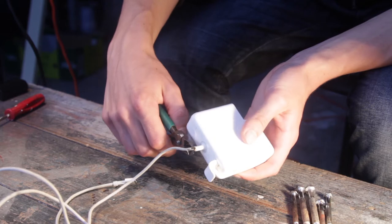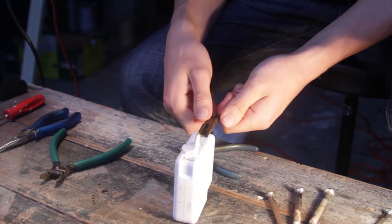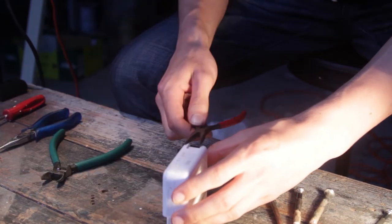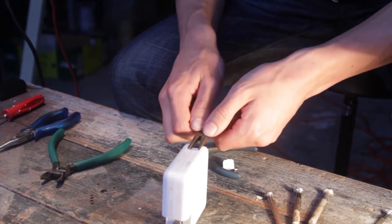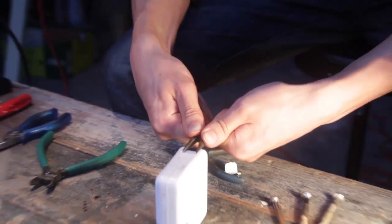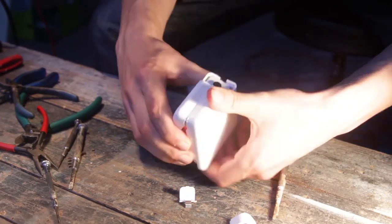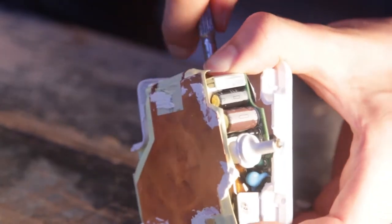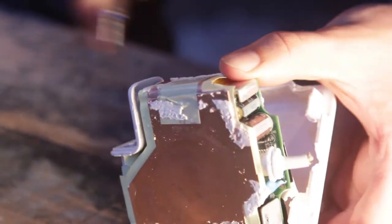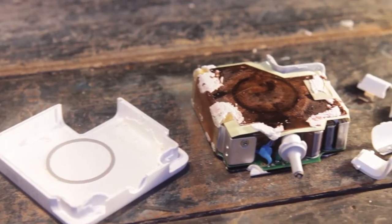Start by cutting off the old cord. Then pry open the case as shown. This may take a while and requires quite a force. You may use a flat blade screwdriver to assist. You should be left with these components.